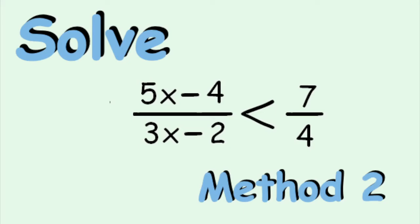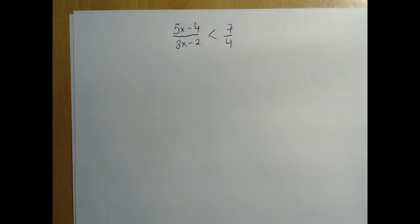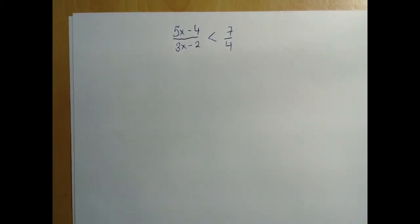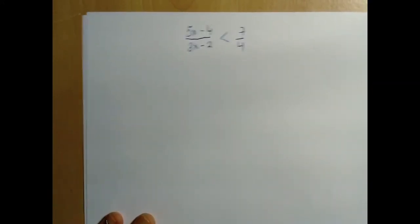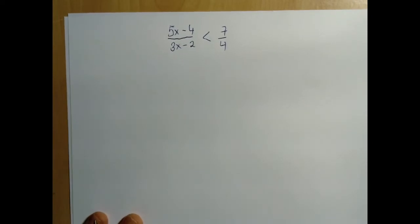We have a rational inequality. The problem with a rational inequality is that in this particular case, cross-multiplying would involve multiplying by 3x minus 2. But in case of an inequality, we need to know whether we are multiplying by a positive or a negative quantity, because if we are multiplying by a negative quantity, we must reverse the inequality sign. So that is the issue.